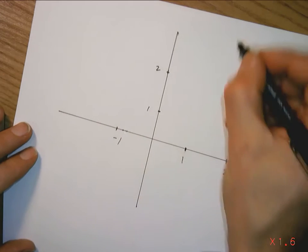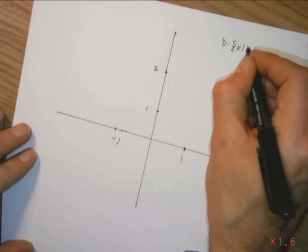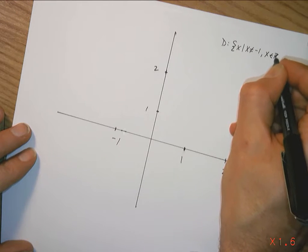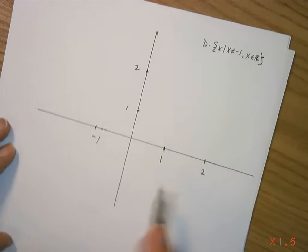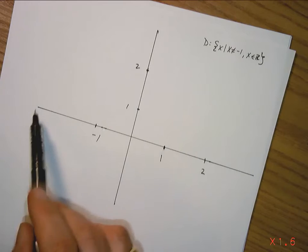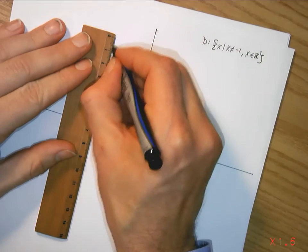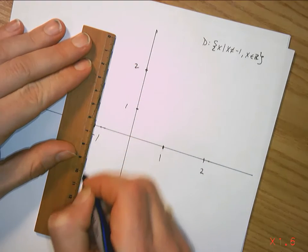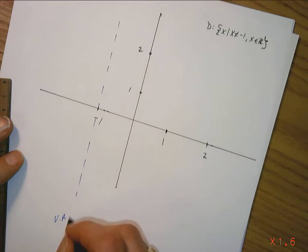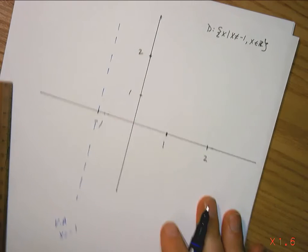Domain. The domain is such that x is an element of the real numbers, but x cannot equal negative 1. And so, what that means to me, people, is that I better have a graph everywhere. I better have a curve that covers all of this domain except for here. And I know what's happening here. That's a vertical asymptote. So, I've got a vertical asymptote at x equals negative 1. And everything else should have a curve with it.